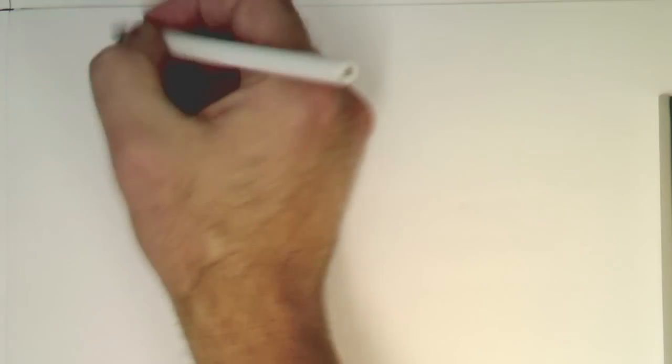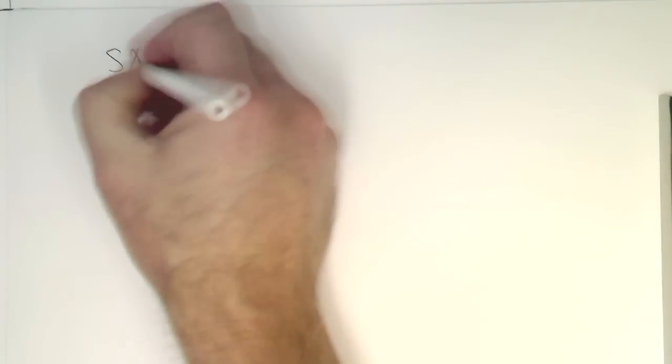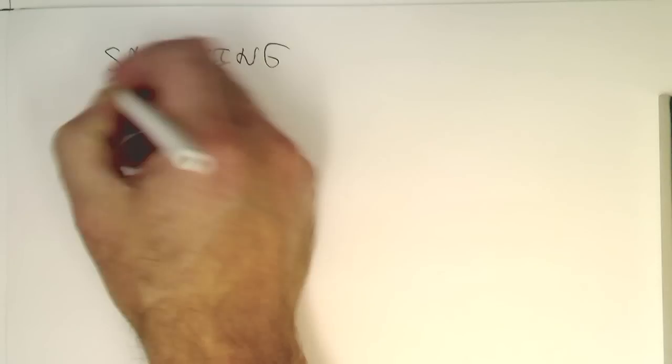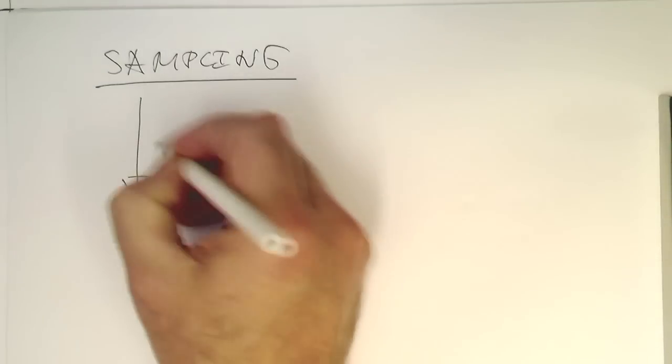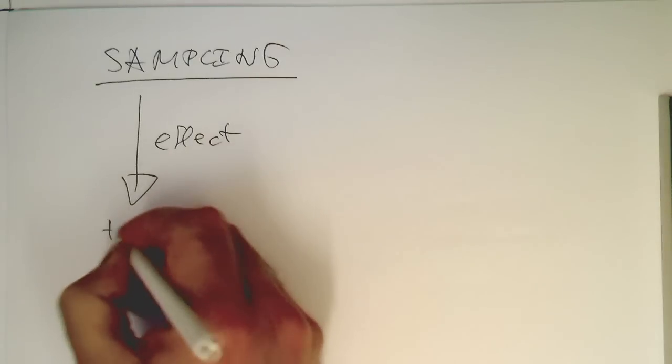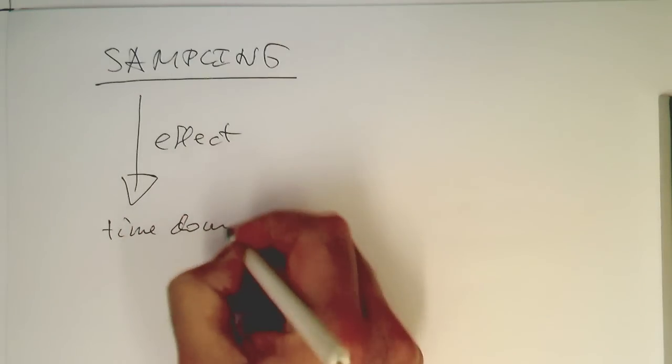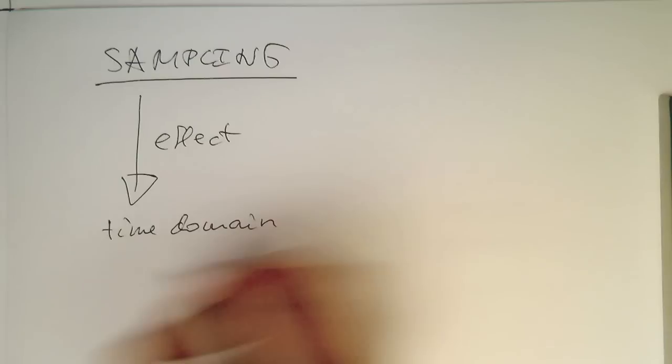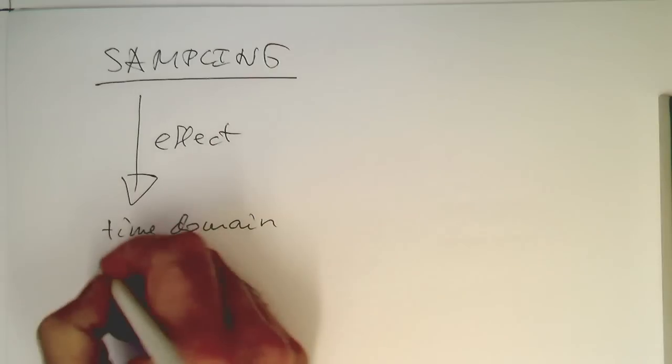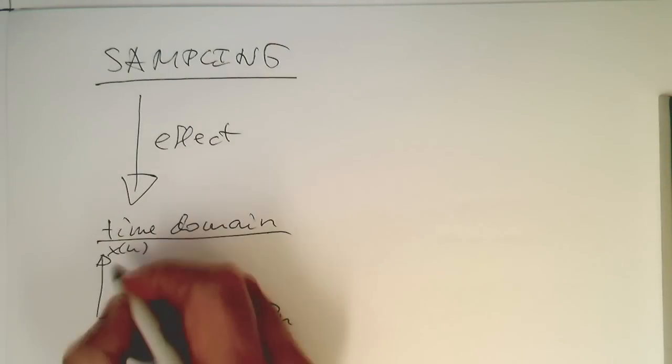In the introduction, we realized that sampling has an effect on the time domain. And I use the following example here: x(n), and that's n, and this time domain x(n).